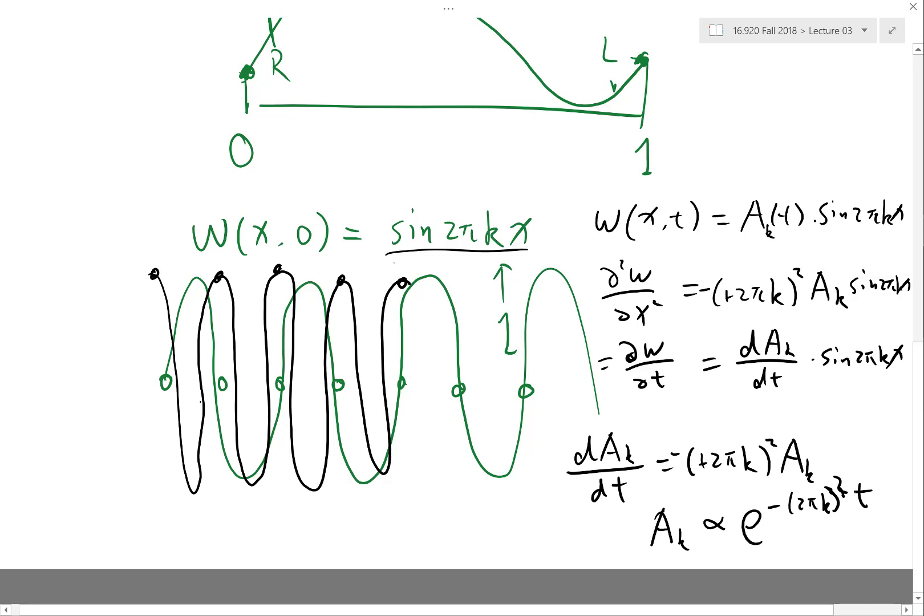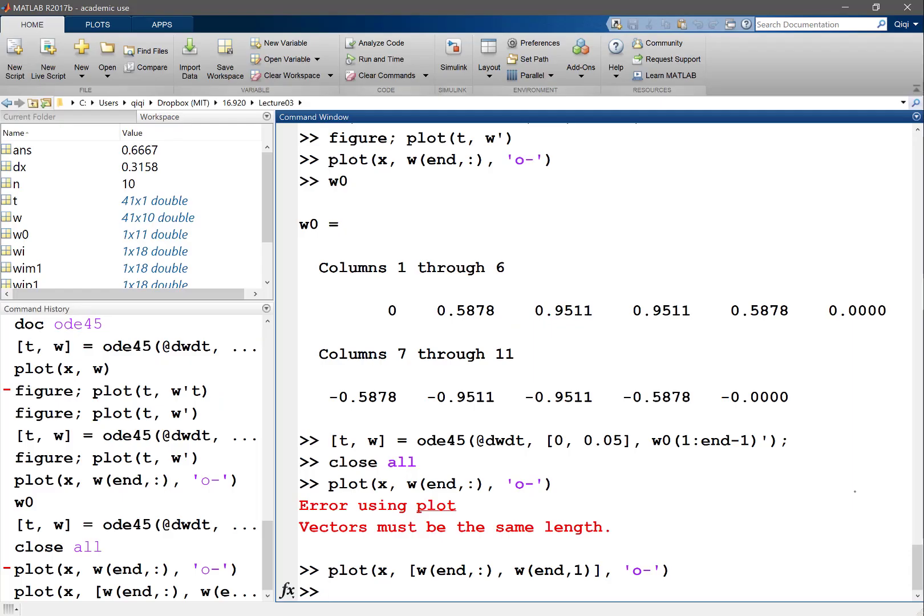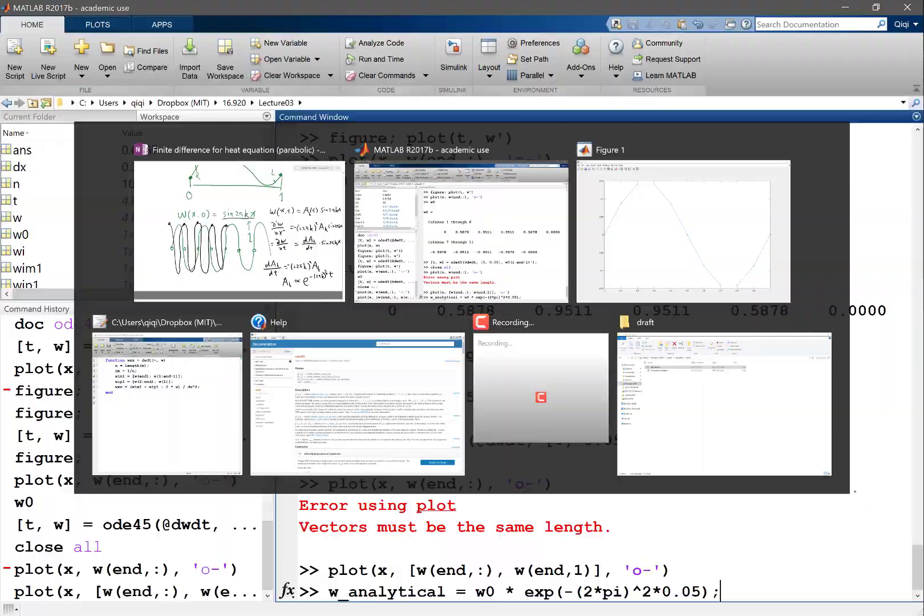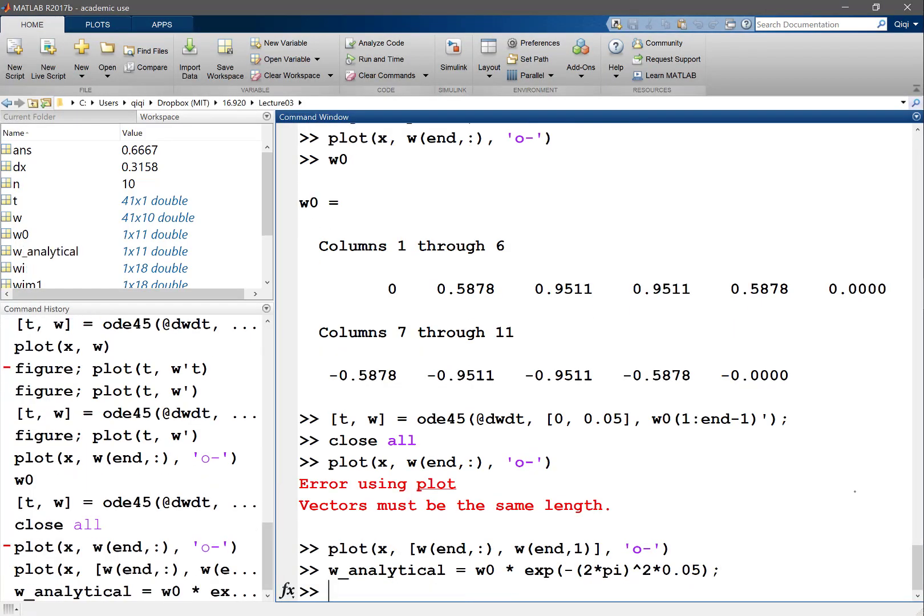So that means Ak is proportional to e to the minus 2πk squared t. That means I expect the solution to have decayed by a factor of e to the minus 2π(0.05) squared. So W analytical equals W0 times exponential of minus 2πk squared times 0.05, where 2πk is squared and the time is outside. Let's hold on and plot x and W analytical.